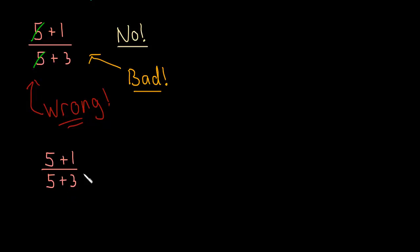So, instead of canceling, let's see what happens if we just do this addition and try and simplify. So, 5 plus 1 is 6. 5 plus 3 is 8. And then we're left with 6 is 2 times 3. 8 is 2 times 4. And now we know those 2's cancel. And we're just left with 3 fourths.